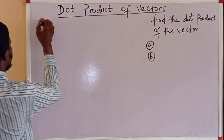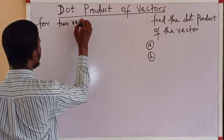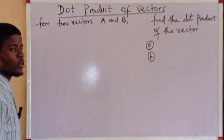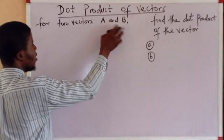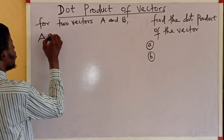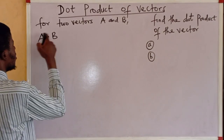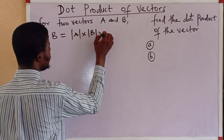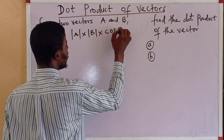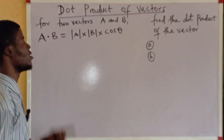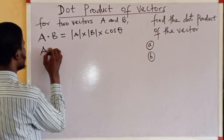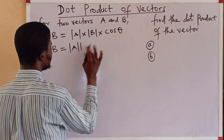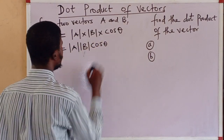For two vectors a and b, the dot product — or scalar product — written as a dot b, is equal to the modulus of a times the modulus of b times the cosine of the angle between the vectors. We are taking theta as the angle between the vectors.